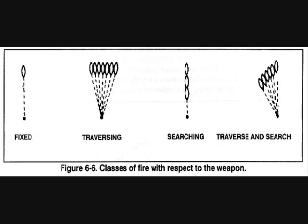C1 — fixed fire. Fixed fire is fire delivered against a point target when the depth and width of the beaten zone covers the target, requiring only one aiming point to provide coverage. C2 — traversing fire. Traversing fire is fire distributed in width by successive changes in direction. The gunner selects successive aiming points throughout the width of the target; these aiming points must be close enough to ensure adequate coverage but not so close as to waste ammunition.